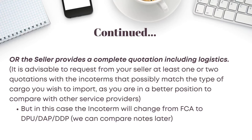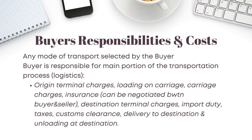Using FCA with containerized goods, the logistics then fall on the buyer. The buyer's responsibilities include origin terminal charges — which is the main portion of the transportation process — such as loading on the carriage, carriage charges, insurance, destination terminal charges, delivery to destination, unloading at destination, as well as import duty, taxes, and customs clearance.